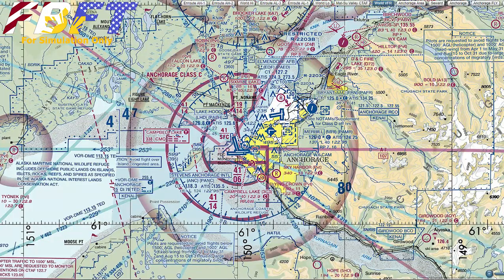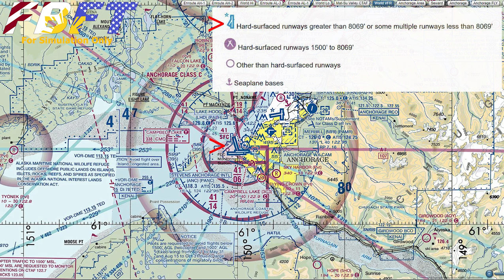Moving north and east from Kenai, we'll look at the largest type of airport icon. Centered in the map is an icon depicting Ted Stevens Anchorage International Airport, and slightly northeast from that is another large icon for Elmendorf Air Force Base. Both airports have hard surface runways over 8,069 feet, and the runway layout is depicted in the icon itself. Both icons have the blue star indicating a nighttime airport beacon. Both airports are in blue, meaning they are towered airports — if they were not, they would be in magenta.